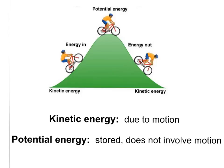Now let's compare and contrast two ways of thinking about energy. Is the object in motion or not? If an object is in motion, we call that kinetic energy — energy due to motion. If it is not in motion, we talk about potential energy — it is stored and does not involve motion. As a bicyclist rides up a hill, there's kinetic energy. At the top, if perfectly still, he has a great deal of potential energy stored.